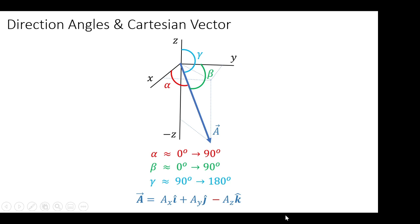I hope this is clear because we will use these ideas in solving Cartesian vectors. In my next video, we will start solving Cartesian vectors using alpha, beta, and gamma. The next one uses transverse and azimuth angles, then slopes or sides of triangles. In the next unit, we will discuss position vectors.